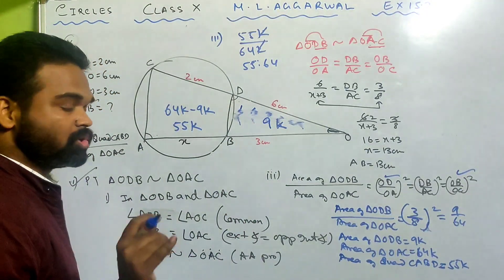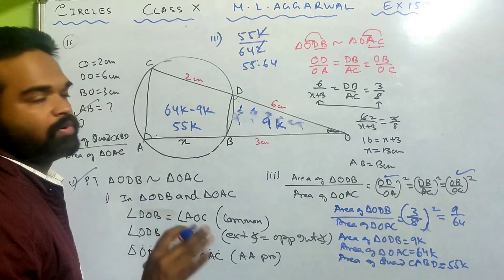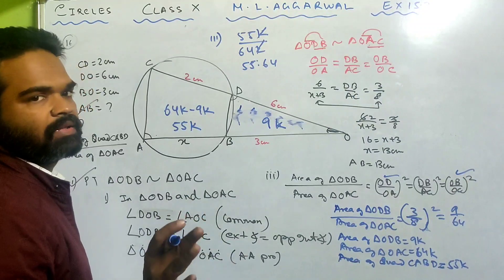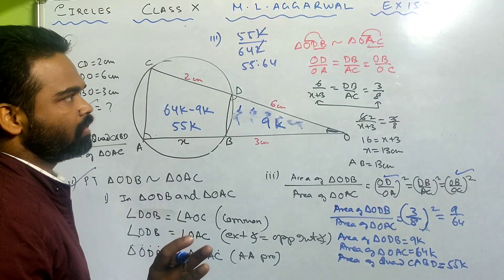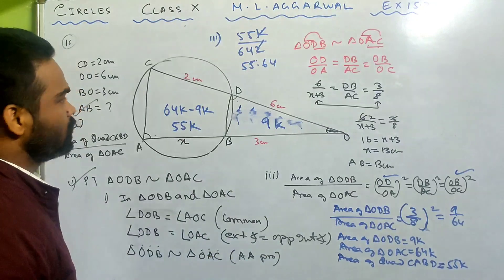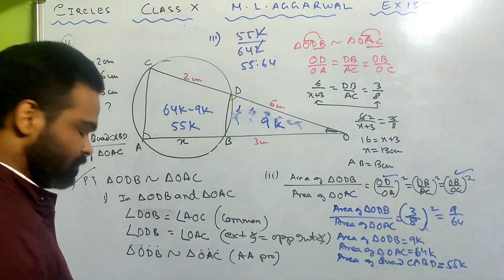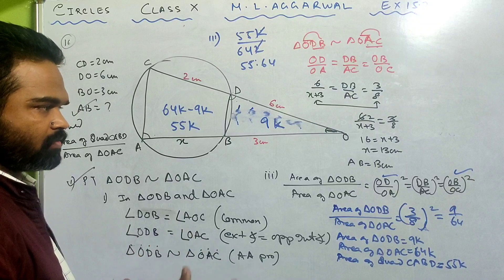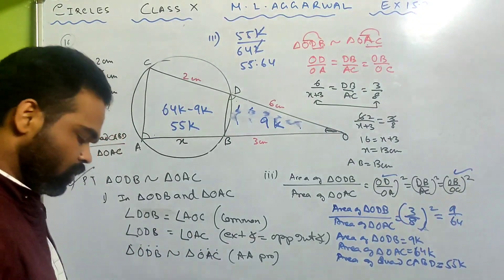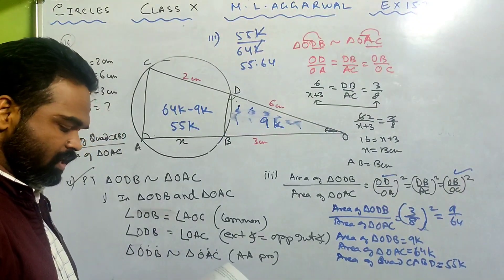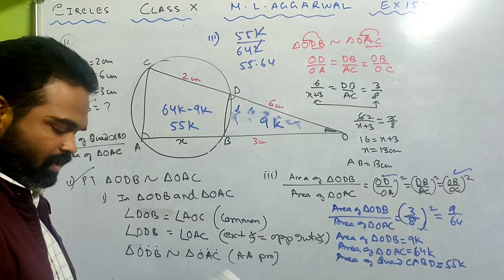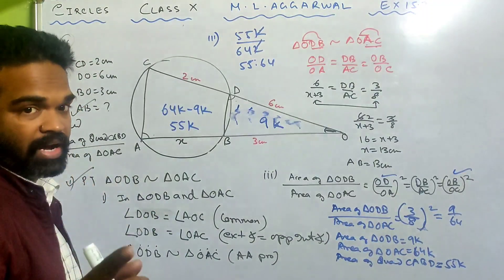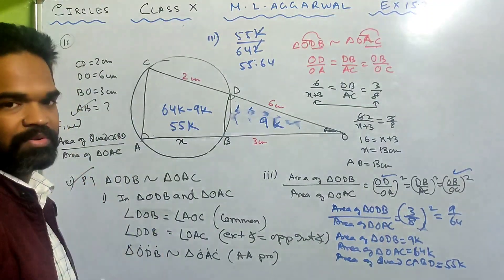Done. You need to know similarity for this sum — if you don't know similarity then you can't do it, and we have done similarity in our previous videos. This was the last sum for the exercise. In the next video we'll definitely do tangent and properties of circles. Till then, take care and be safe. If you like the video, subscribe and share with your friends.